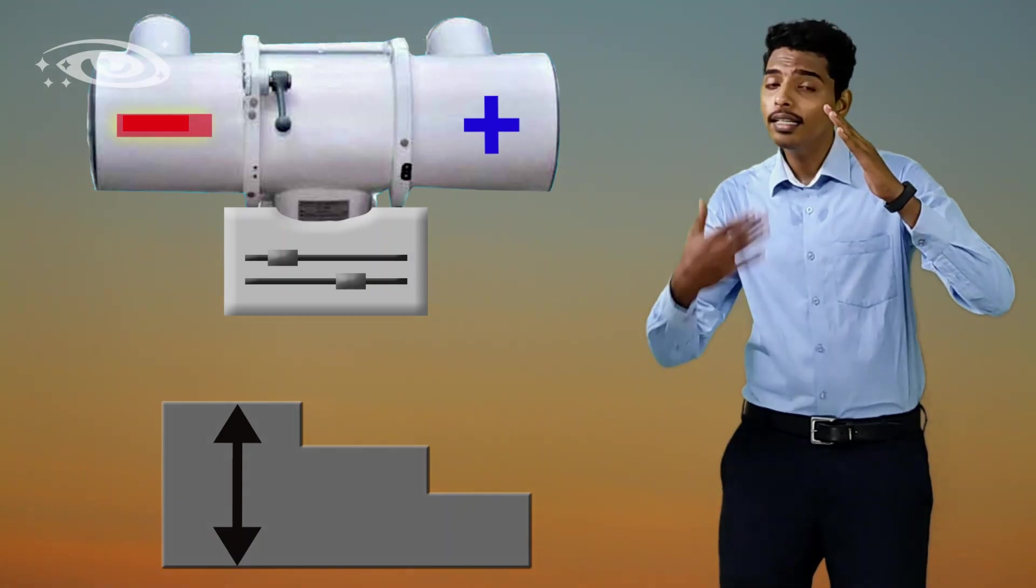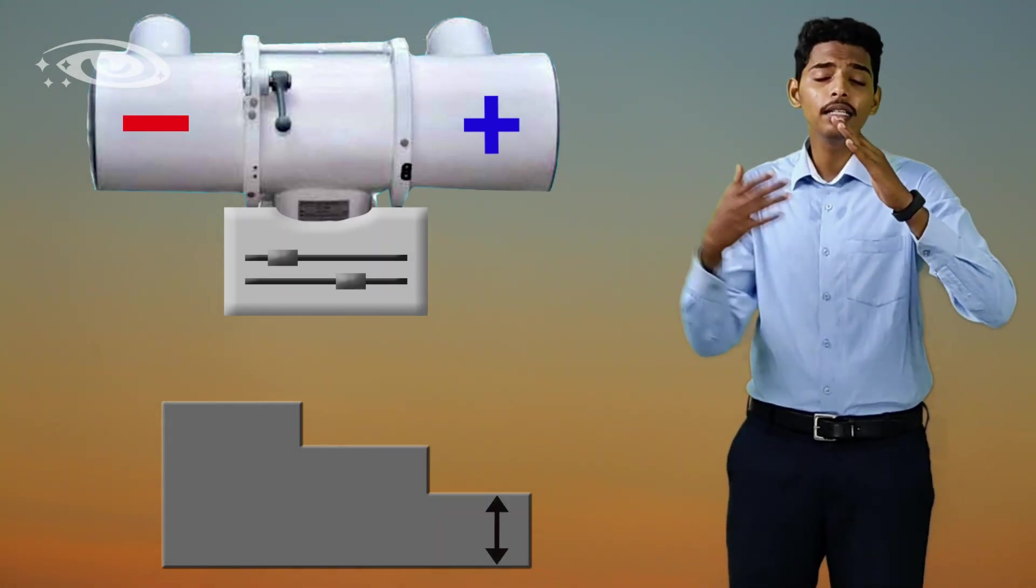This is called anode heel effect. Then how can we rectify this problem? Yes, we can rectify this problem. We can easily rectify the problem by placing the thicker part at the cathode side and placing the thinner part at the anode side.